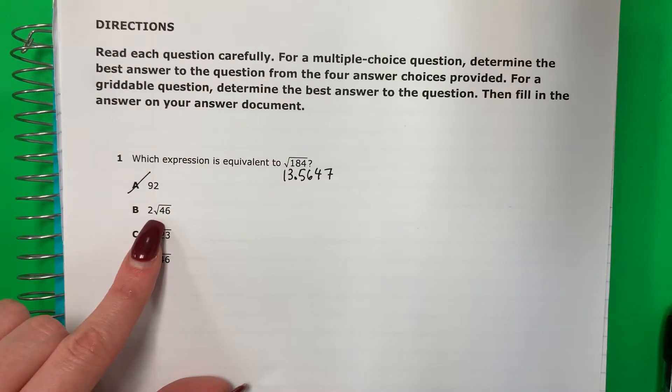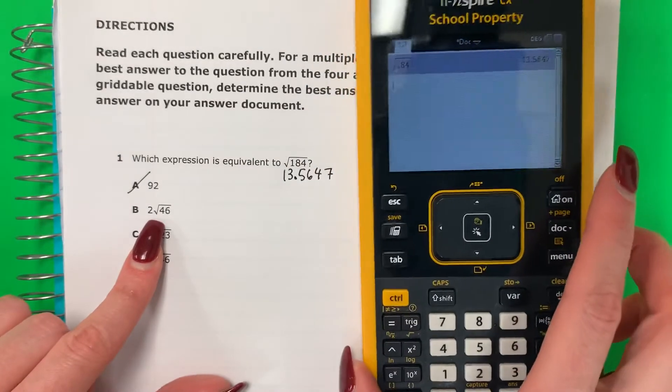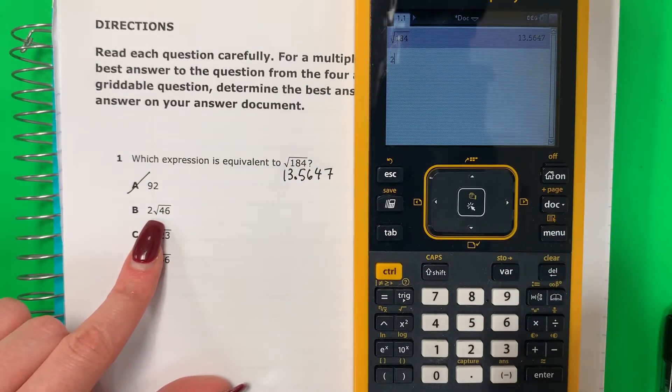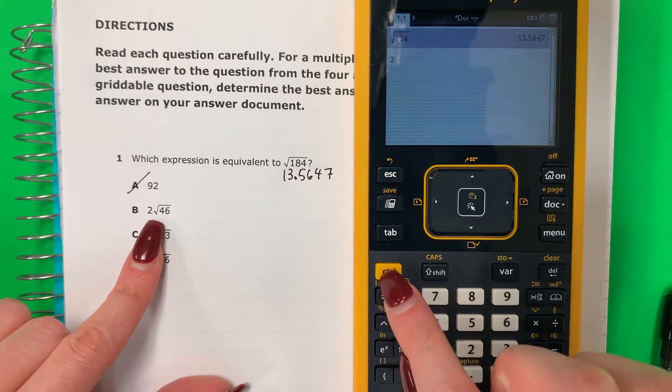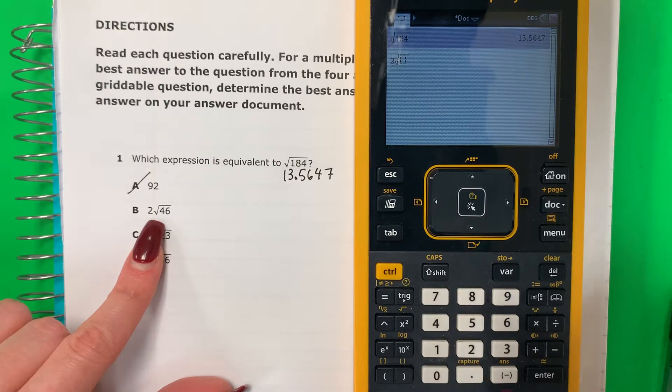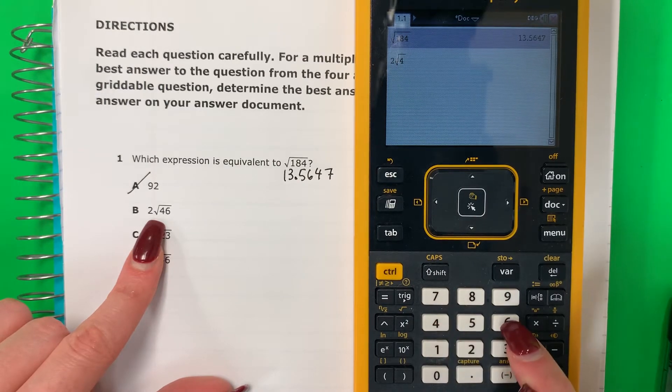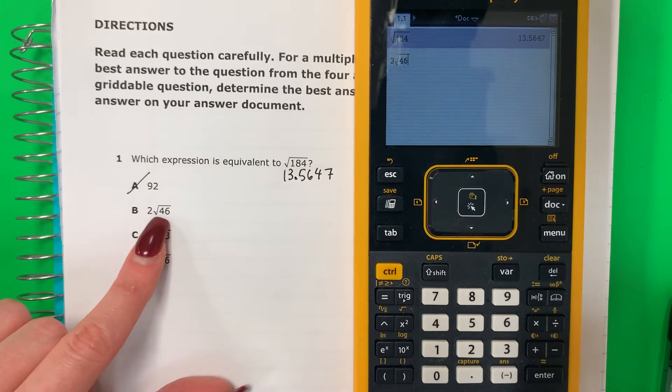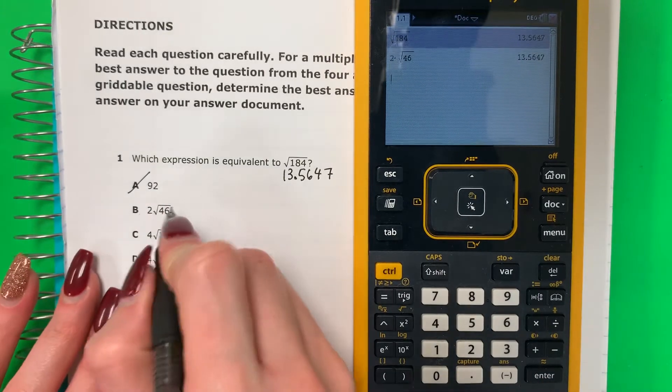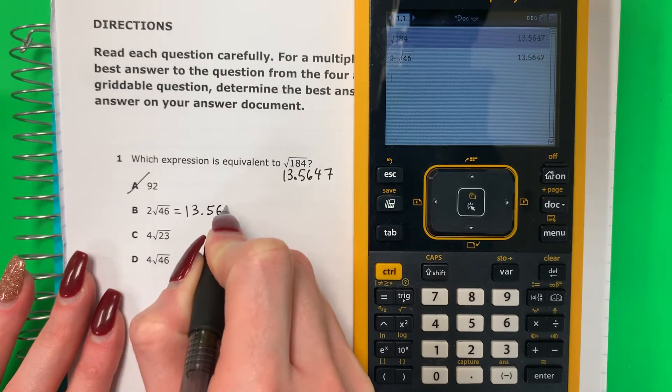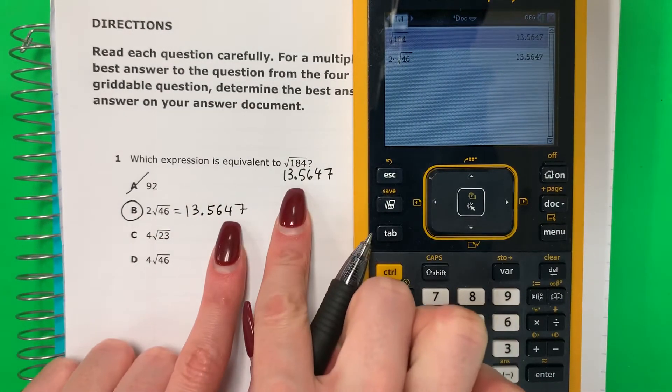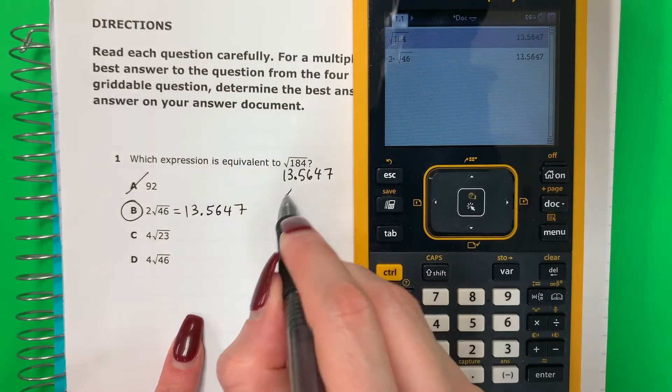Let's go ahead and do this one in the calculator. Ahora esta en la calculadora. So to do this one, you're going to go ahead and push 2. And then you're going to do control, x squared there to get that. And then you're going to get 46. So just put it exactly the same, exactamente igual. And you get 13.5647. That's the same number. Es el mismo número. So this is it.